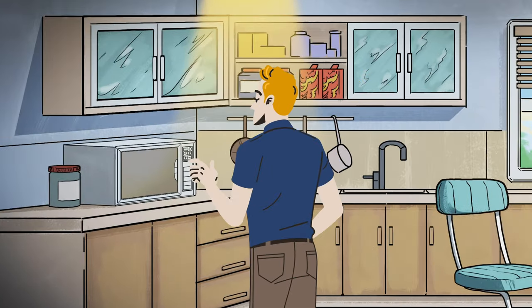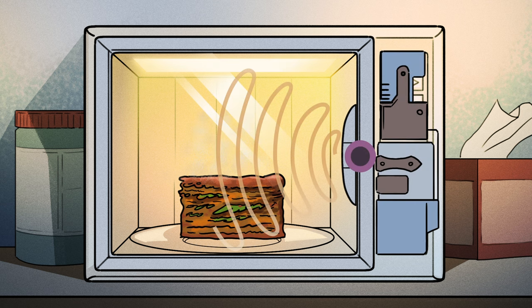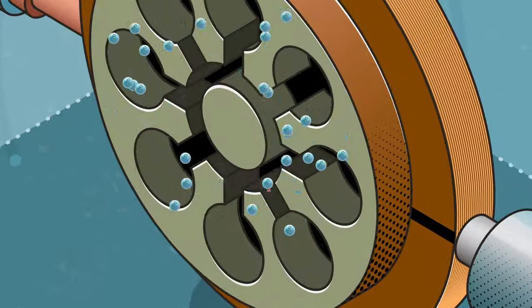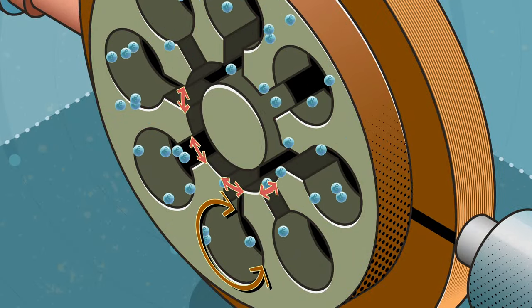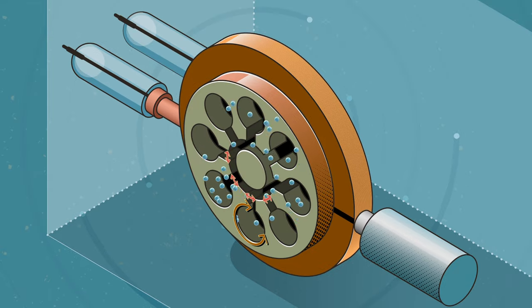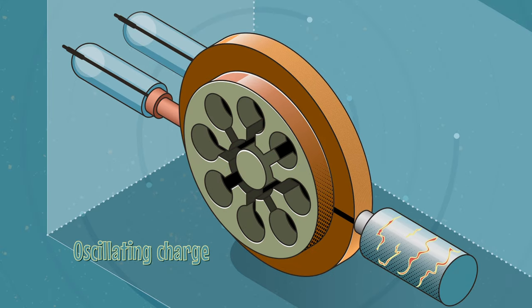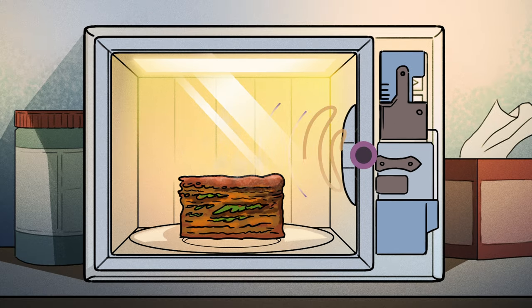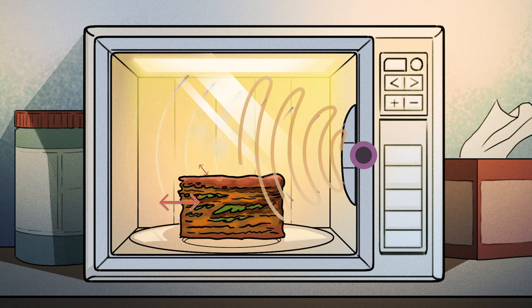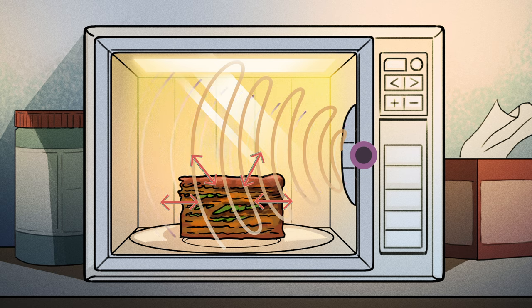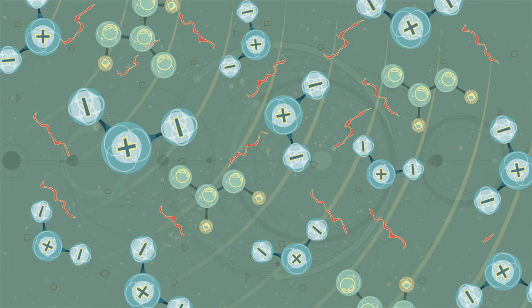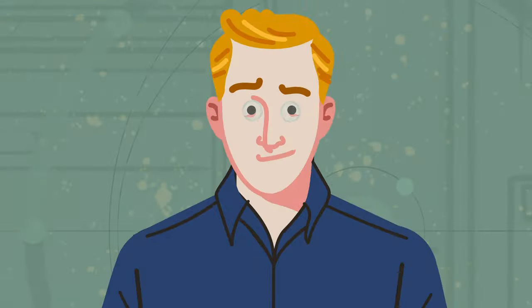Household microwave ovens are fitted with cavity magnetrons. When you activate a microwave oven, a heated element within the magnetron ejects electrons, and a strong magnet forces them to spiral outwards. As they pass over the magnetron's metallic cavities, the electrons induce an oscillating charge, generating a continuous stream of electromagnetic microwaves. A metal pipe directs the microwaves into the main food compartment, where they bounce off the metal walls and penetrate a few centimeters into the food inside. When the microwaves encounter polar molecules in the food, like water, they make them vibrate at high frequencies.